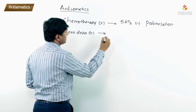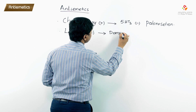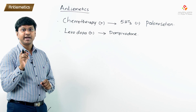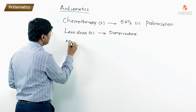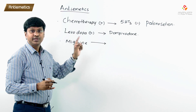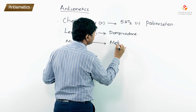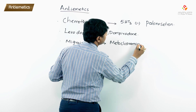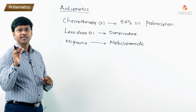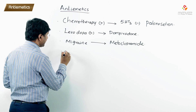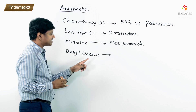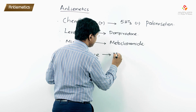In case of levodopa-induced vomiting, the drug of choice is domperidone, which is a prokinetic drug. In case of migraine-associated vomiting, the drug of choice is metoclopramide. For drug or disease-associated vomiting, we also give metoclopramide.